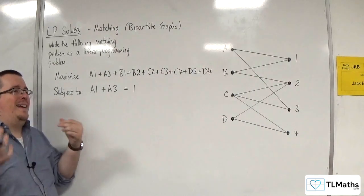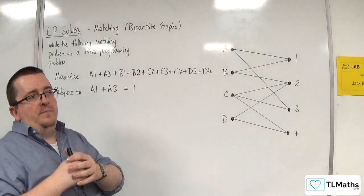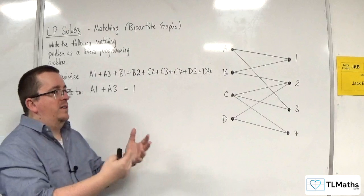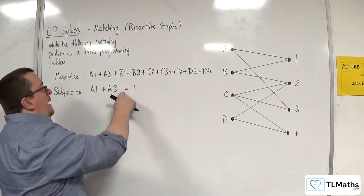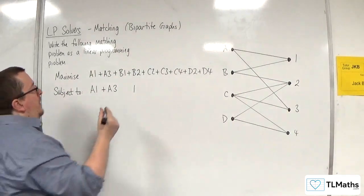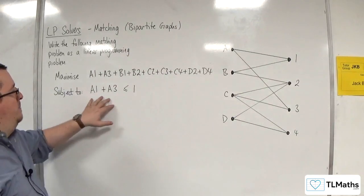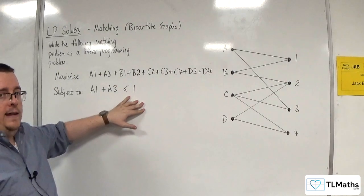But because we're looking at a maximal matching as well, we want to make sure that the way that we write this down attributes to that, and the way we write it down works for all the scenarios. We can't guarantee that A will be picked. So we're going to have to have that as less than or equal to 1. It can't be anything greater than 1, so it can't be 2, otherwise worker A could do both of them.